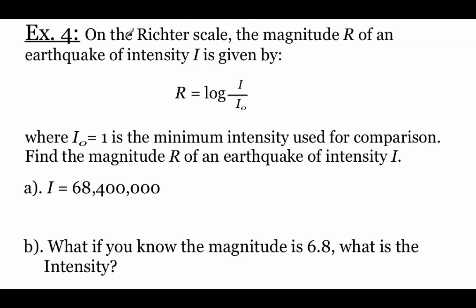Here we go. Last example. We're taking a look at the Richter scale, which is used to measure the magnitude of earthquakes. So we've got r equals log of i divided by i sub 0. We're told that that i sub 0 value is going to be 1 because that's the minimum intensity used to compare earthquakes. So first thing we're going to do is look at finding the magnitude r if we're given an intensity of 68,400,000. So all we have to do is plug that into our equation up here. So r equals log of that 68,400,000 over that i sub 0 value of 1. And now this is just a calculator problem.